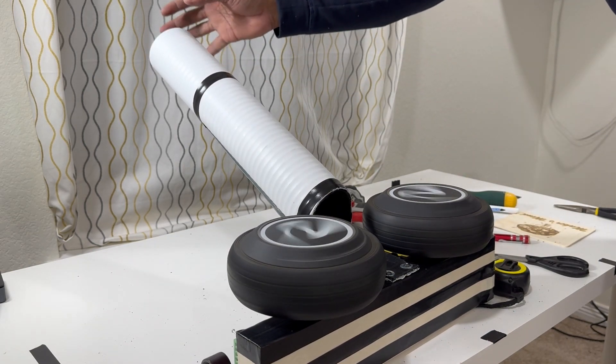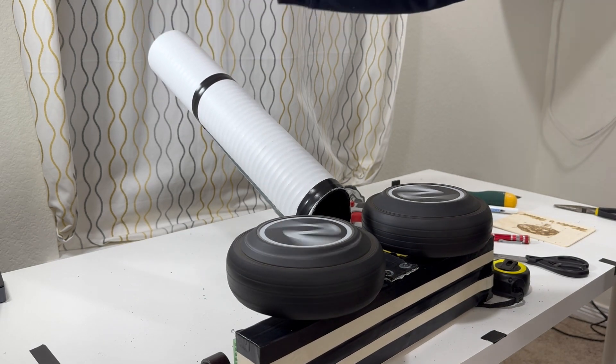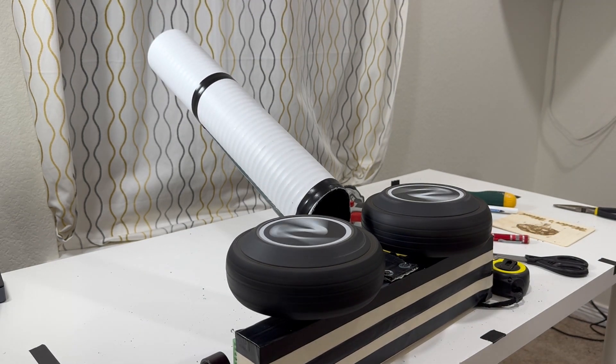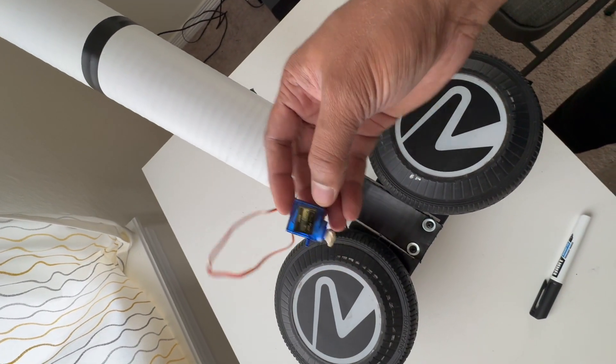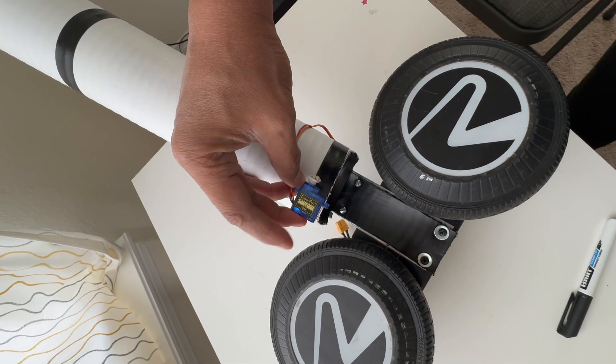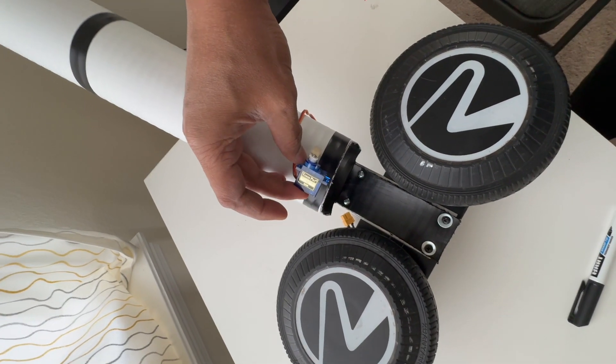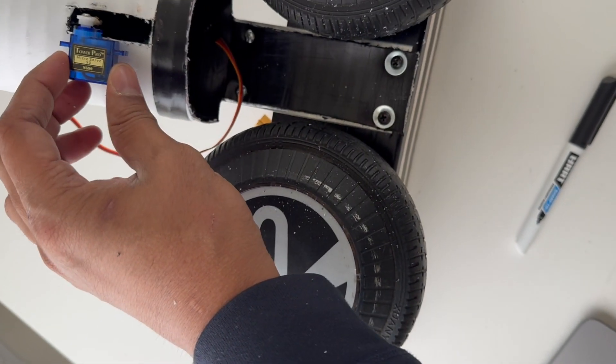For automating the ball dispensing mechanism, I'm going to use a 5V 9-gram servo motor in front of the PVC tube and attach the servo arm at an angle of 90 degrees to downward direction.